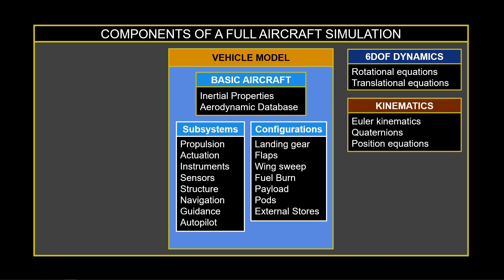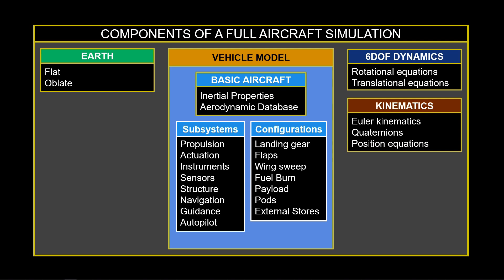There are kinematic equations that capture the attitude and position of the aircraft. For attitude, we have Euler kinematics, or alternatively, quaternions. There are also position equations, referred to as the navigation equations. The form of the governing equations will depend on whether we make a flat earth assumption or work with an oblate, rotating earth. Note these options lead to two different forms of governing equations.